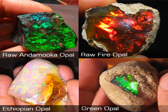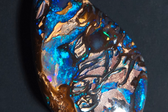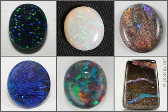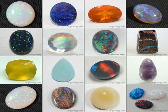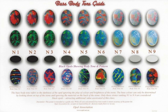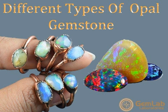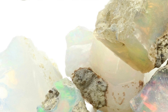Boulder opals are another type, which are formed when opal forms within crevices in ironstone boulders. Interestingly, boulder opals often retain the appearance of the original host rock, which adds to their unique aesthetic. There are also black opals, which are characterized by their dark background color and brilliant iridescence. These are found primarily in Australia and are highly prized in the jewelry industry. Finally, fire opals are bright red or orange in color and are formed in volcanic rocks. They are typically found in Mexico and are also highly sought after for their beauty.